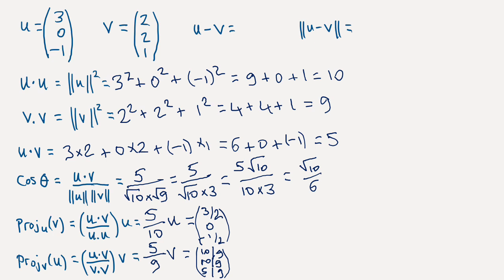Finally, let's do the distance between u and v. So first of all, if we calculate the vector u minus v, we'll have 1, minus 2, and minus 2. And if we calculate the distance between u and v, that's going to be the norm of this vector. So u minus v, the norm.